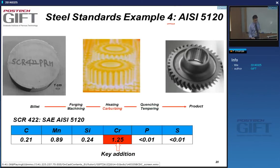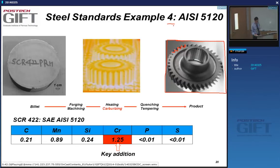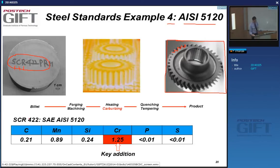Another example: a material turned into carburized gear wheels. This is AISI 5120, equivalent to SCR420 in JIS. S stands for steel, CR stands for chrome — so it's a chromium steel. These billets are forged and machined to get the gear wheel, then heated and carburized — carbon is diffused into the surface layer to get abrasion resistance. Then quench and temper to get the final product.